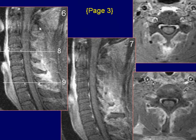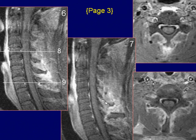Sagittal post-gadolinium fat saturation T1-weighted image demonstrates intense enhancement in the region of the interspinous ligament and pre-vertebral space. There is bony discontinuity and displacement of the C7 spinous process as seen on this image.